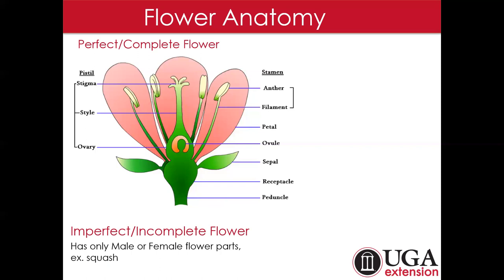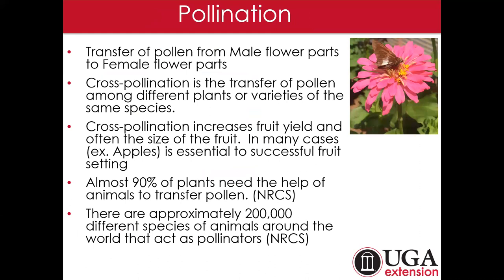Not all flowers are created equal. In some cases imperfect flowers are involved. A great example is squash in the vegetable garden — we often see male flowers come out first, then female flowers a few days later. We rely on cross pollination for food production. Even largely self-fertile plants like beans and tomatoes will have increased fruit set or fruit size because a pollinator helped dislodge more pollen from the flower structure.